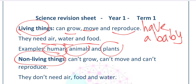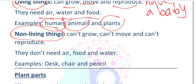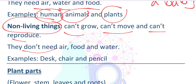Plants reproduce — of course they don't have a baby, they will have a seed. This seed will grow to be a new plant. Non-living things, like this table — the table can't grow, can't move, and can't reproduce. The table will never have a baby, and it doesn't need air, food, or water. Non-living things like a desk, chair, and pencil.